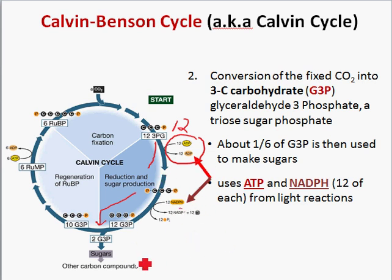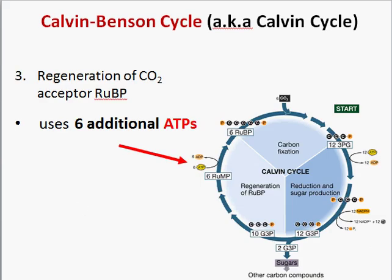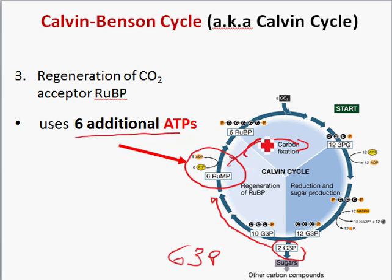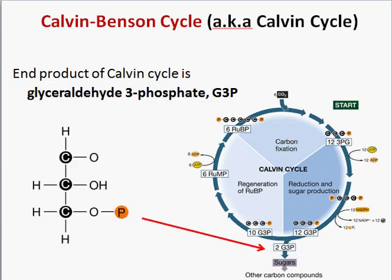The third phase of the Calvin cycle regenerates the cycle itself. At the end of the reduction phase, the important end product is G3P — glyceraldehyde-3-phosphate. G3P goes on to make sugars and other compounds, but to regenerate the cycle so more CO2 can enter and join with RuBP, six additional ATPs are required. A new CO2 can then come in, join RuBP, and the process starts over.